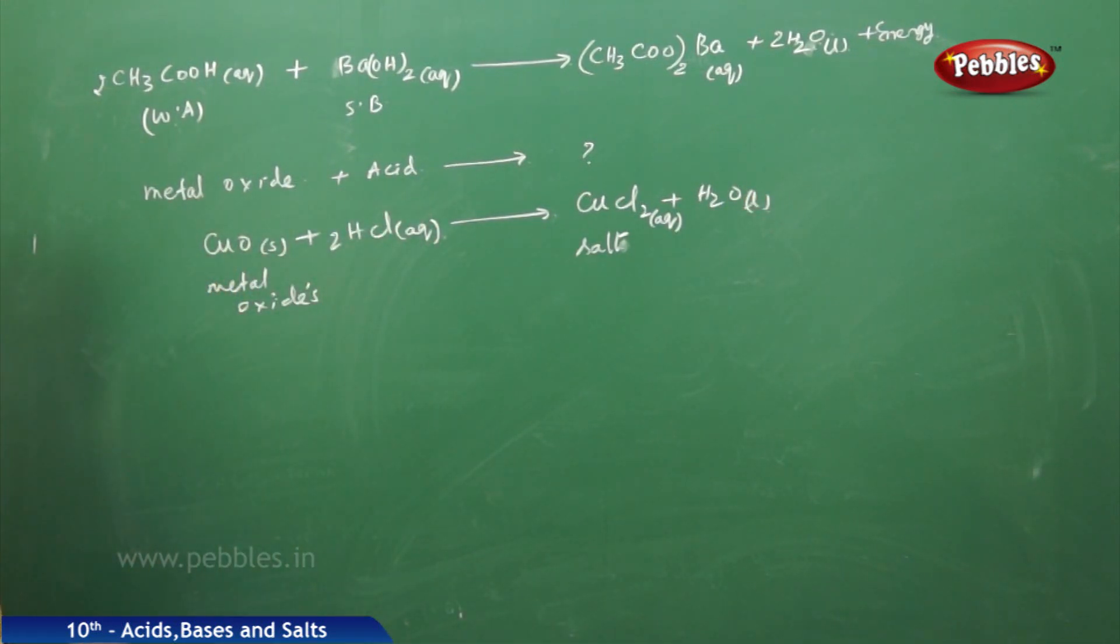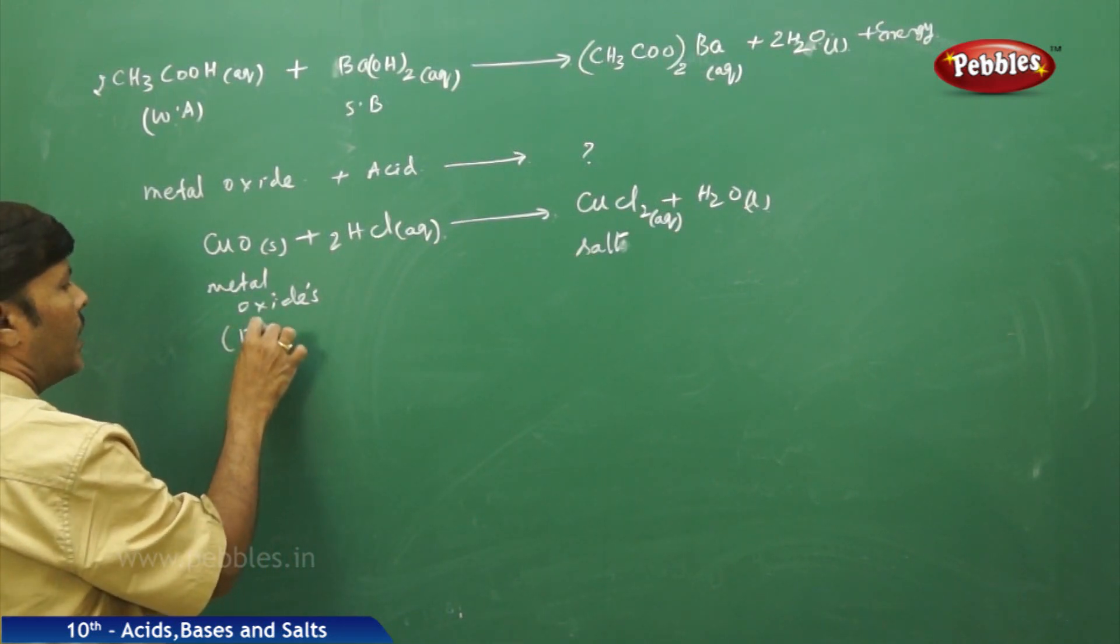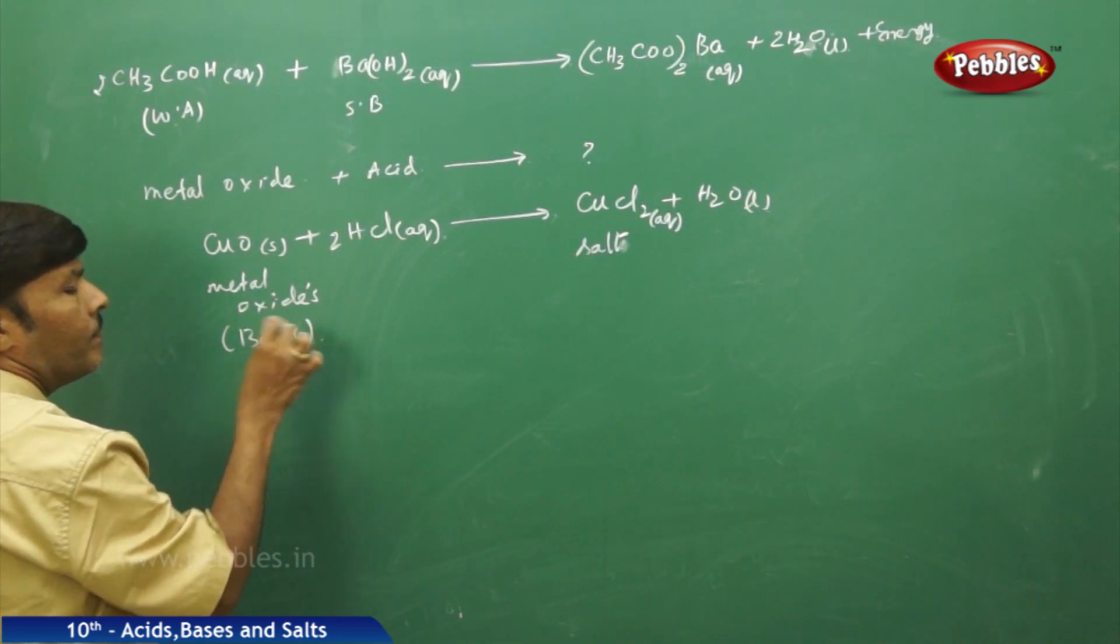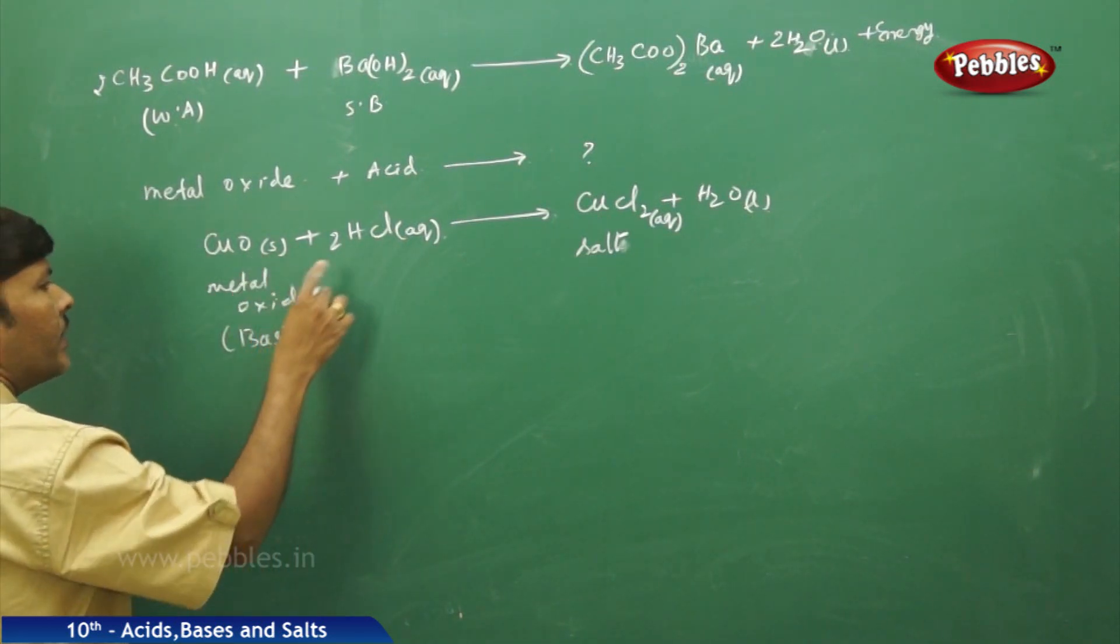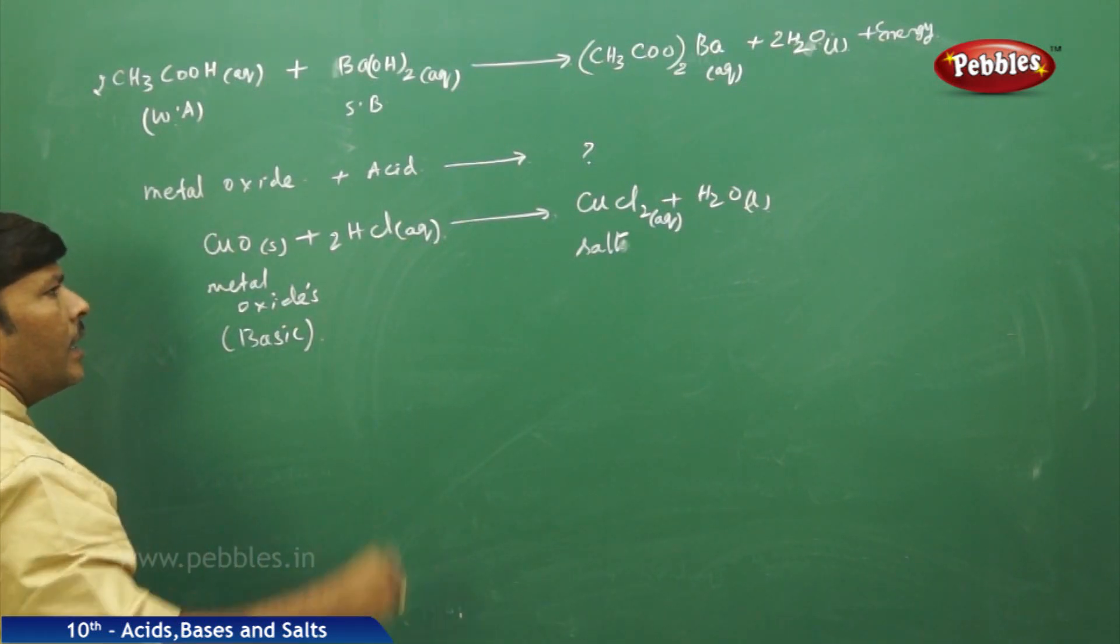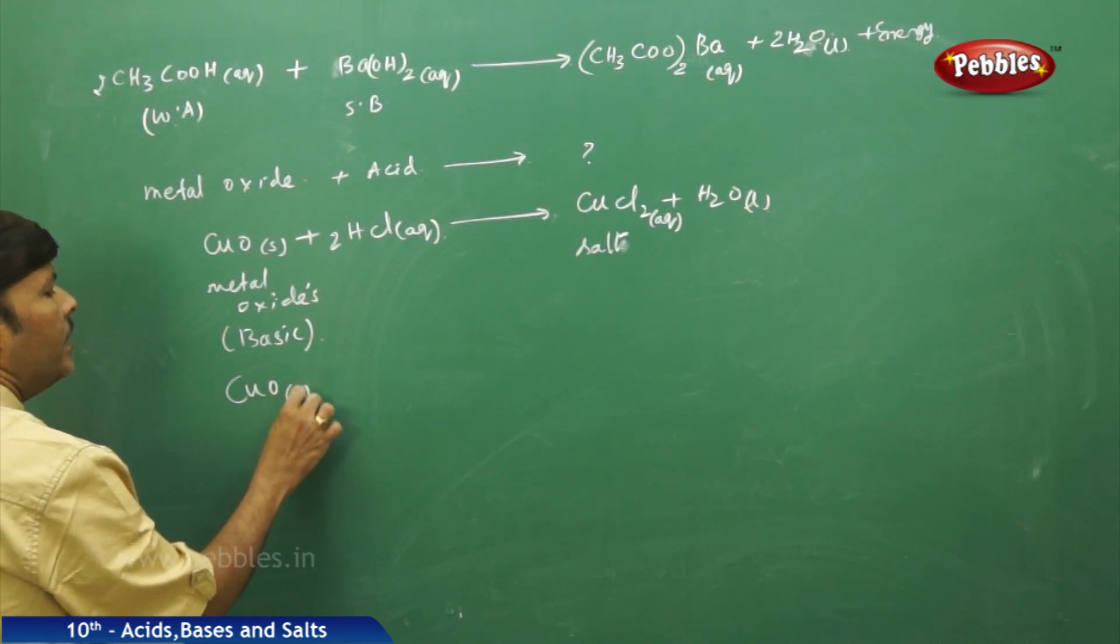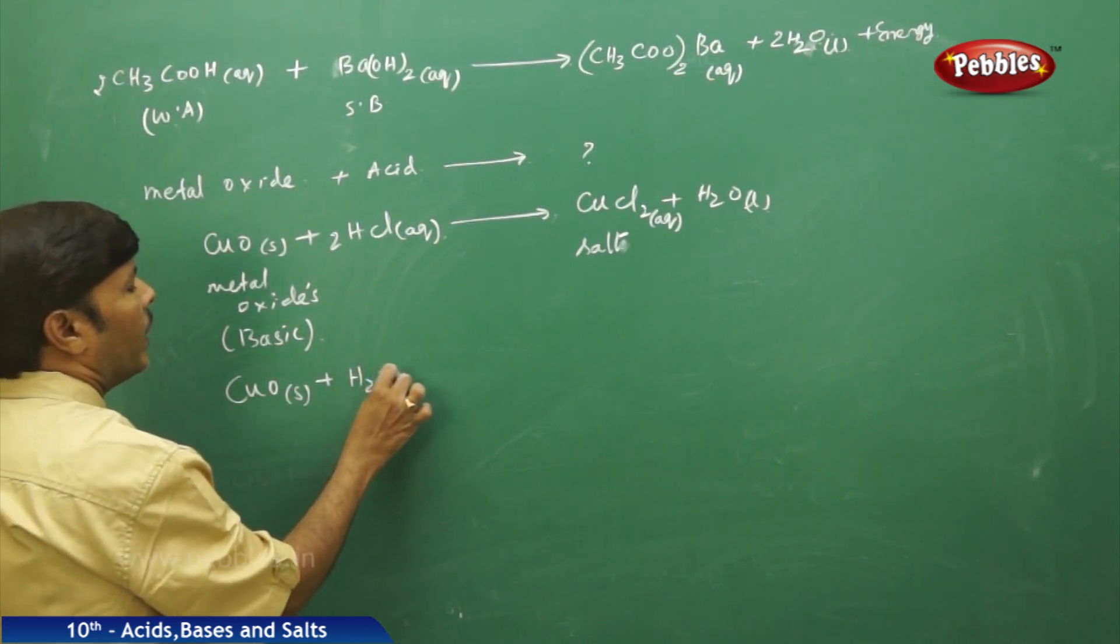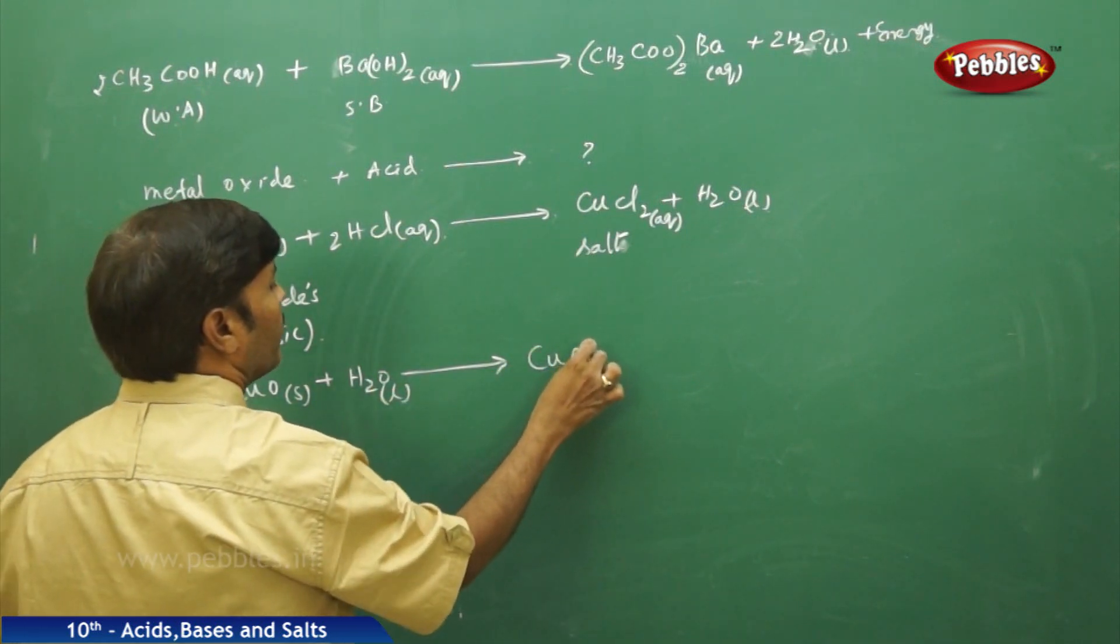So that means we are able to understand that all metal oxides, all metal oxides, they are basic in nature. If they are basic in nature, if metal oxide is basic, metal oxide when it is reacting with an acid, it will give a salt and it liberates water. But the same metal oxide solid, if it is directly subjected to hydrolysis liquid, it gives a base, that is cupric hydroxide.